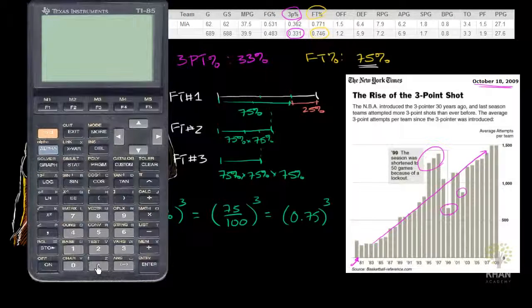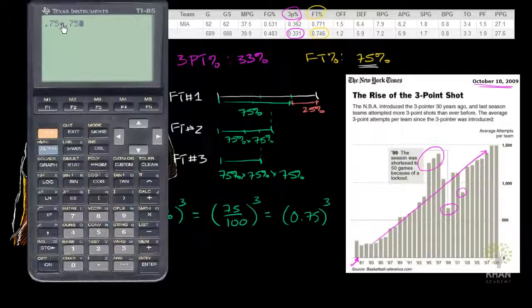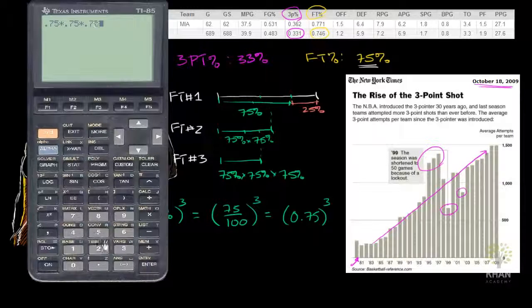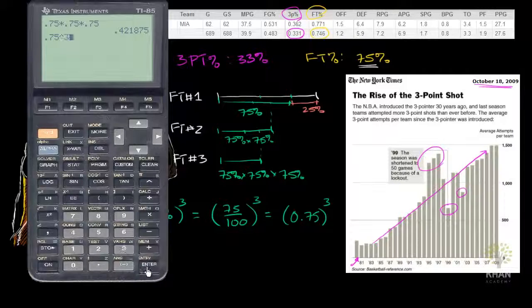And actually let me show you, we get the same result. We can write 0.75 times 0.75. And on this calculator, that little snowflake looking thing, it means multiplication, times 0.75. And then we get 0.42, I'll round to the nearest hundreds. And that's the same thing we would get if we got 0.75 to the third power.